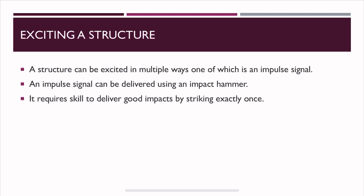A structure can be excited in multiple ways, but for structural FRF we use an impulsive signal delivered by an impact hammer. Using an impact hammer requires good skill to deliver clean single impacts — many times when hitting difficult locations, the hand trembles and you hit twice, called a double impact. Software features can detect such double impacts to exclude them from measurements.